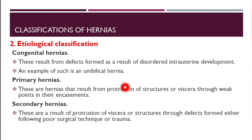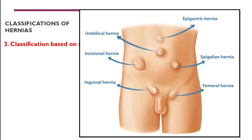Etiologically, hernias can be congenital, primary, or secondary. Congenital hernias result from defects due to disorders in intrauterine development — an example is umbilical hernia. Primary hernias result from protrusion of structures through weak points in their encasement. Secondary hernias result from protrusion through defects formed by poor surgical technique or trauma. Classification based on location includes inguinal hernia, femoral hernia, incisional hernia, umbilical hernia, epigastric hernia, and Spigelian hernia.